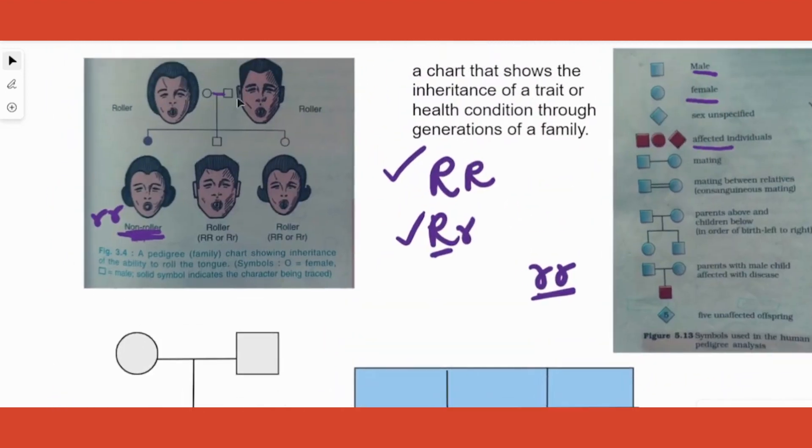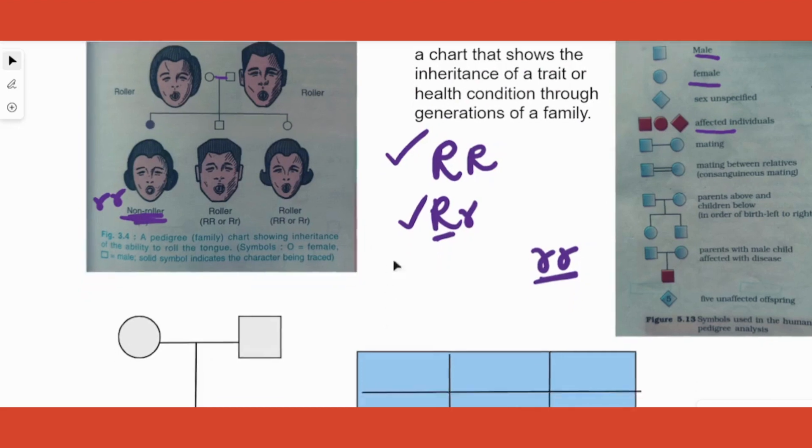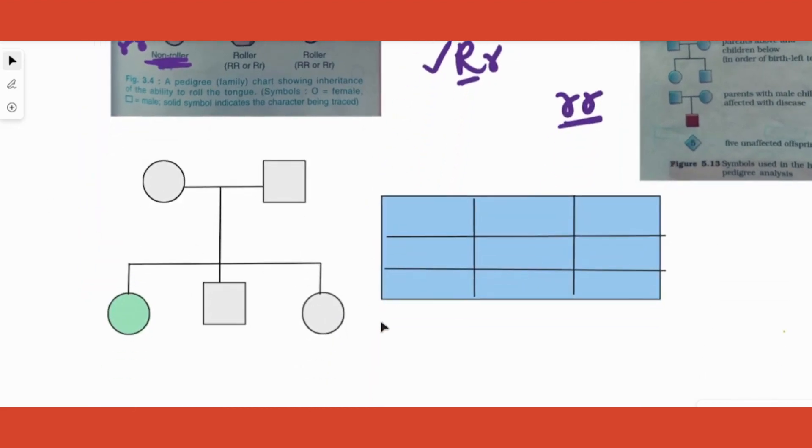Now the question here is, I have just recreated the same thing. A circle joined with a square indicating male progenies are three: one girl who is affected, one boy, another girl. Same thing I have written over here. So this is given to you. From there you have to figure out how the parents are.